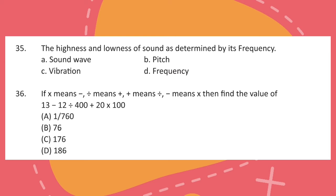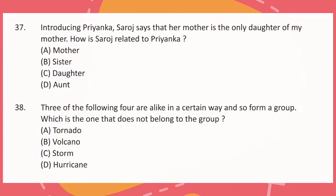Question 36. If multiplication means subtraction, division means addition, addition means division, subtraction means multiplication, then find the value of 13 minus 12 divided by 400 plus 20 into 100. Question 37. Introducing Priyanka, Saroj says that her mother is the only daughter of my mother. How is Saroj related to Priyanka?